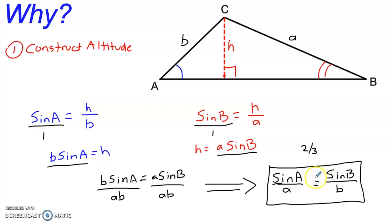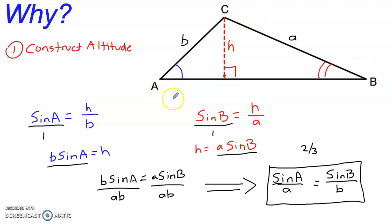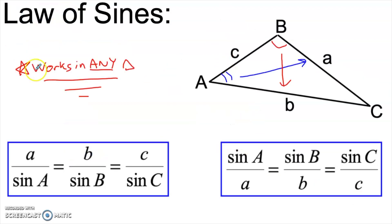Now where does the other third come from? Well, this altitude was a random choice — we didn't have to use that altitude. I could have also dropped an altitude from B or an altitude from A. And if you do that with either one of the other angles, you'll get the rest of this expression, which we call the law of sines.